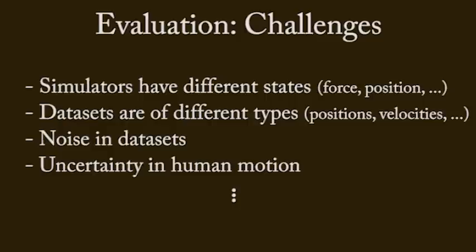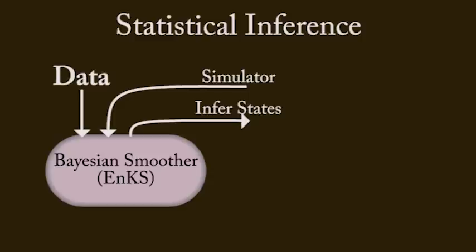We propose a new method to robustly compare crowd simulations to datasets, which accounts for these issues. Our method is based on the EM algorithm for statistical inference. We first use a Bayesian smoother to estimate likely states of the crowd simulation based on the crowd data.